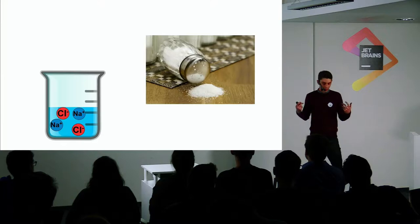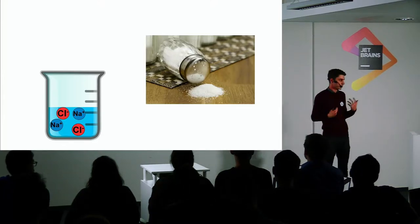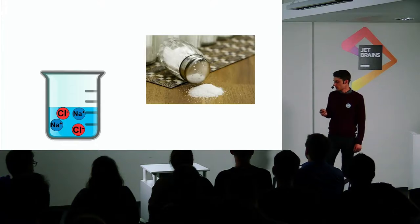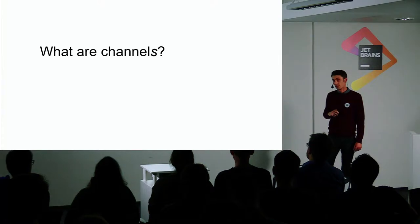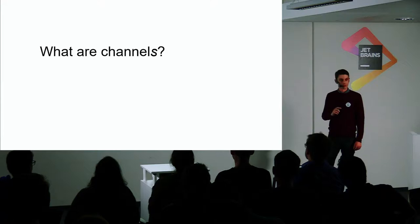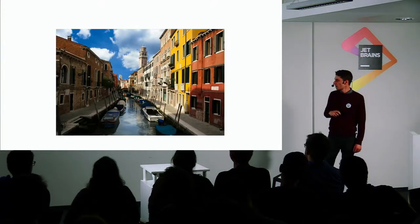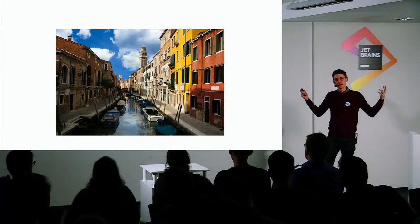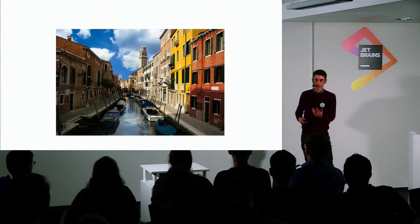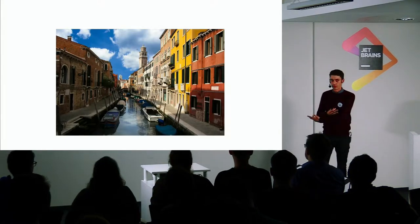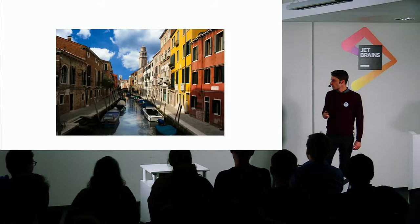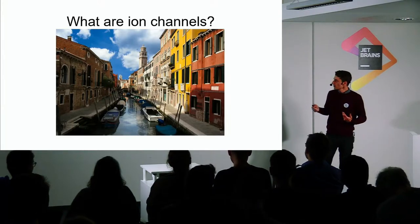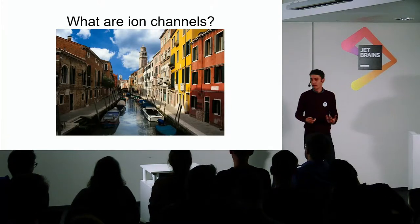And also in our bodies—our blood and other body fluids also contain a lot of ions. This is what's going to be important for us right now. So that's ions. Channels, you probably already have an idea about this one. I'll just show you a picture of a channel that I like—this is a canal in Venice. It's essentially just a pathway that a boat can move through because it can't move through the buildings.